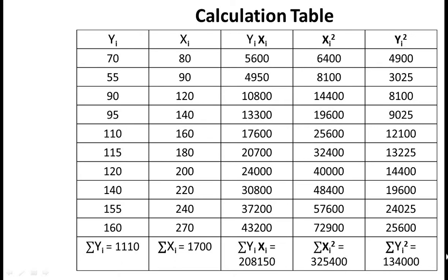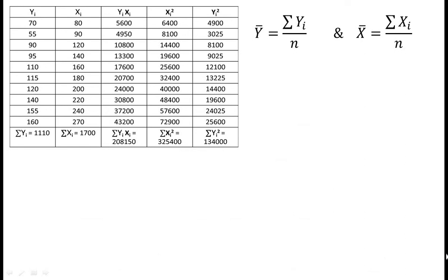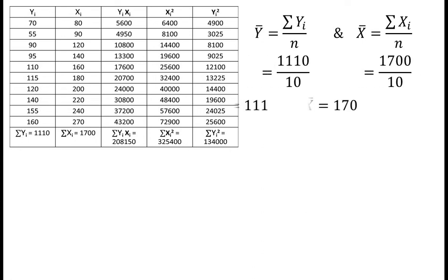Now, ȳ is equal to summation yi by n and x̄ is equal to summation xi by n, where n is the number of observations. So we get ȳ equal to 111 and x̄ equal to 170. That is, mean of y is 111 and mean of x is 170.